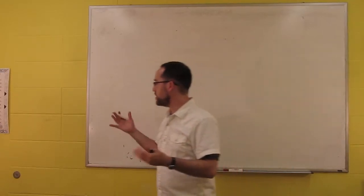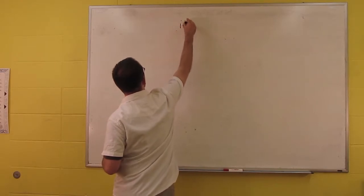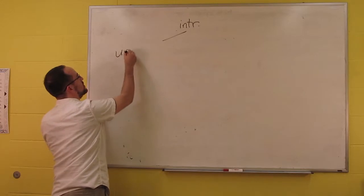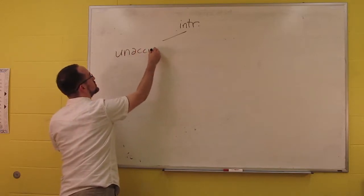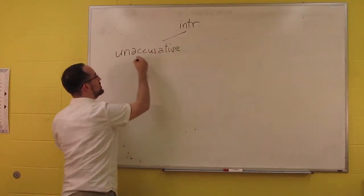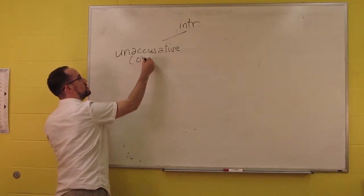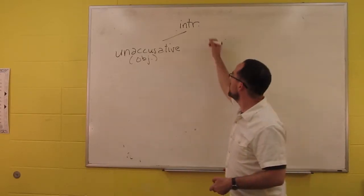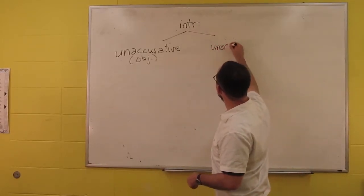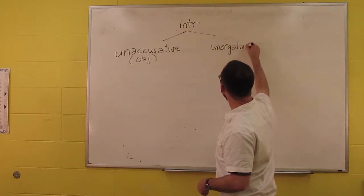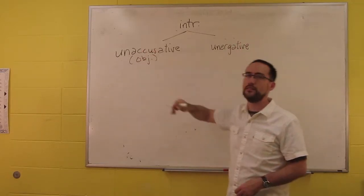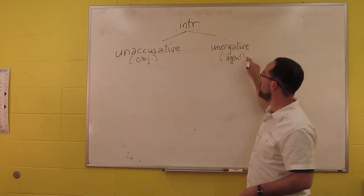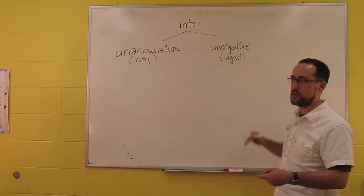The terms that he used are still used today. Instead of just simple intransitives, we have two types. The first type is called the unaccusative, and these are the object-like ones. The other ones are called unergative. Essentially, you can think of them as in the object position but not the object, and here in the agent position but not the agent of the verb. They're just a single argument.